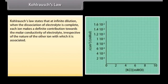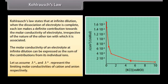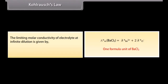Kohlrausch's Law states that at infinite dilution, when the dissociation of the electrolyte is complete, each ion makes a definite contribution towards the molar conductivity of the electrolyte, irrespective of the nature of the other ion with which it is associated. The molar conductivity of an electrolyte at infinite dilution can be expressed as the sum of the contributions from the individual ions. Let λ°₊ and λ°₋ represent the limiting molar conductivity of cation and anion respectively. The limiting molar conductivity at infinite dilution is given by: v₊λ°₊ + v₋λ°₋, where v₊ and v₋ represent the number of positive and negative ions furnished by each formula unit.